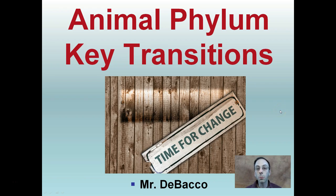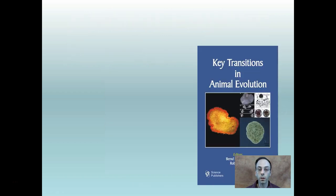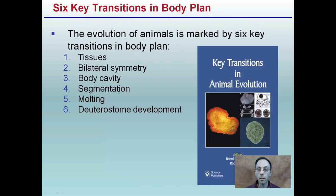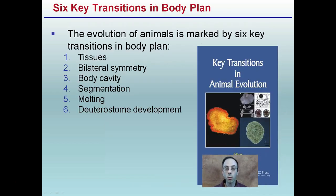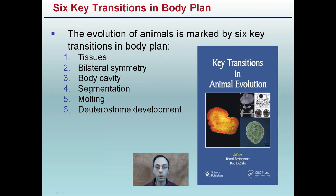Here we're going to look at animal phyla and the key transitions that occur, allowing us to determine which animals are more primitive and which ones are more advanced in certain features. When we're looking at these transitions, we're looking at transitions in the body plan, marked by six key points. Here's the basic overview.